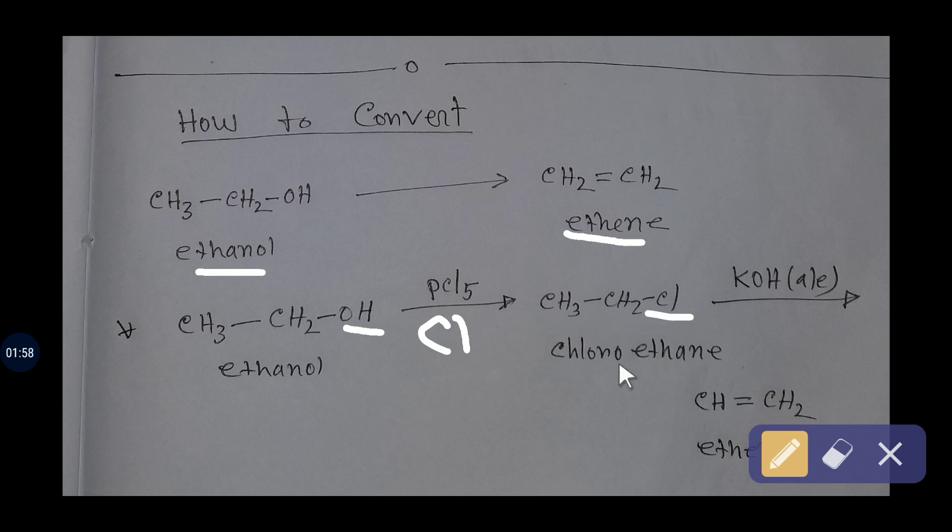If you add here alcoholic potassium hydroxide, that is ethanol plus potassium hydroxide, then this chlorine will take hydrogen from the adjacent carbon and you will get a double bond between the adjacent carbons.